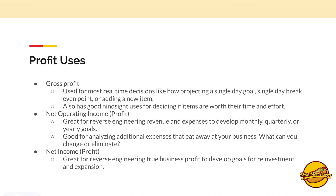When it comes to net operating income, this is great for reverse engineering scenarios. You could start with a revenue and reverse engineer that and the expenses to develop a monthly, quarterly, or yearly goal. It's good for analyzing additional expenses that might be eating away at your business — helping you decide what can I change, where expenses are high, can I substitute something cheaper, do I really need this, and what can I eliminate without removing quality.